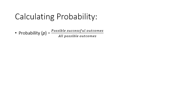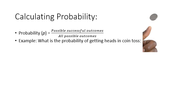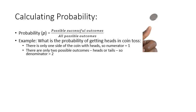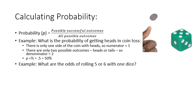When we calculate probability, used as the lowercase p, possible successful outcomes over all possible outcomes. So for example, when we flip a coin, I think I have that coming up next, the possible successful outcomes, maybe this person calls heads, that's one possible successful outcome, heads, out of all possible outcomes, which is two, heads or tails, so there's a 50% chance of getting heads. In a coin toss, there's only one side of the coin with heads, so the numerator equals one. There are two possible outcomes, heads or tails, so denominator is two. One over two is one half, is 50%. So probability is one out of two is 0.5 is 50%.